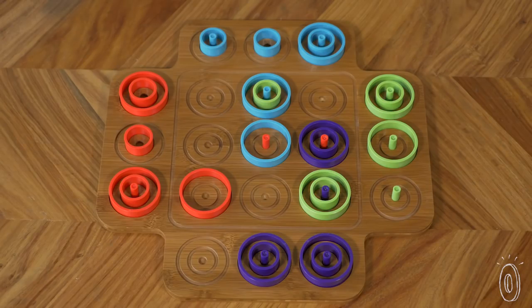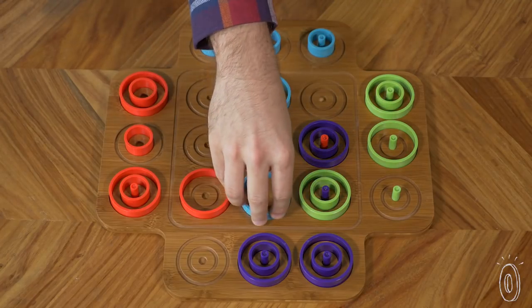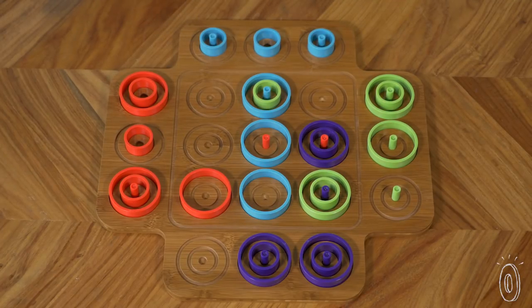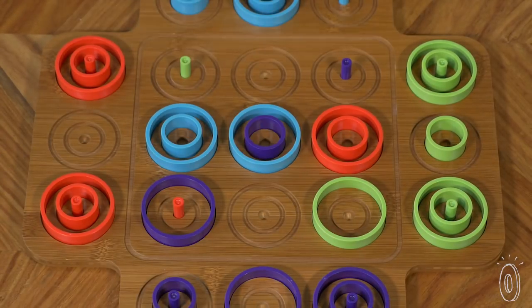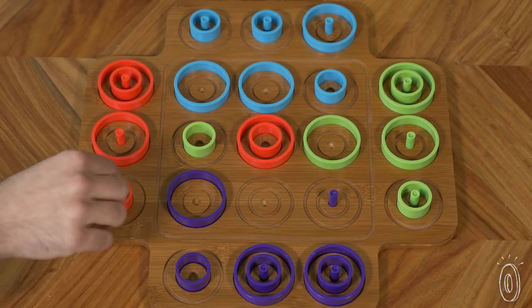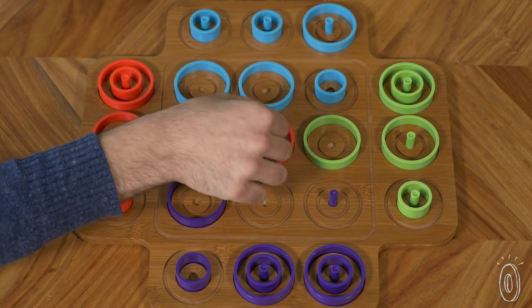You can win in a variety of different ways: by having three of your same size pieces in a row, like in the traditional game, or by having three pieces in ascending or descending order of size, or to give you even more options, by having three of your concentric pieces in the same space.